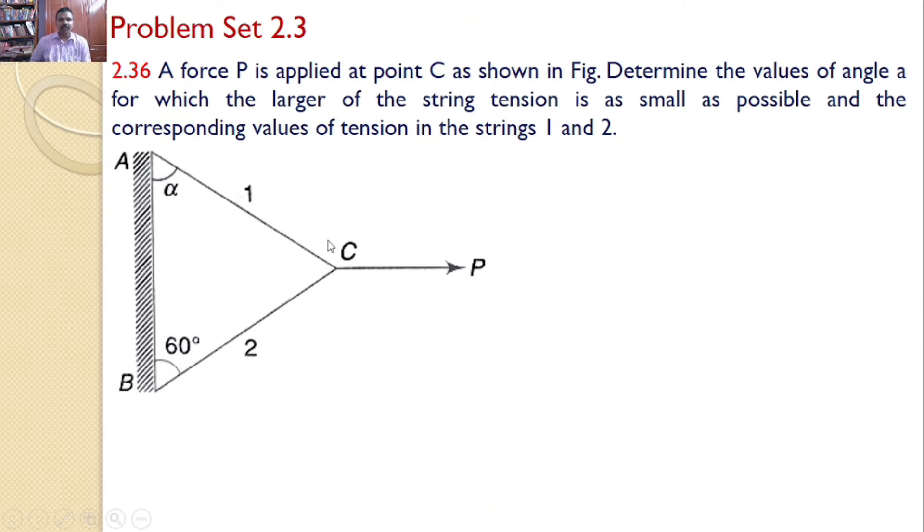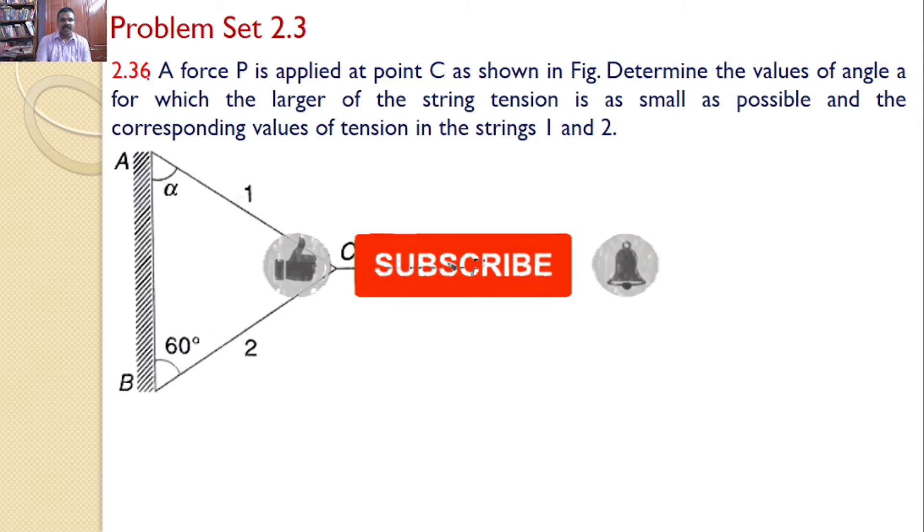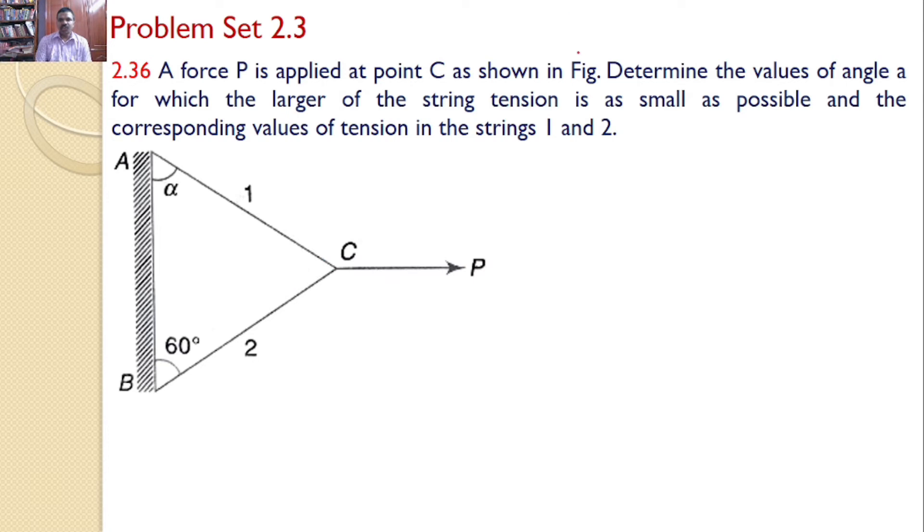In this tutorial we will discuss problem set 2.3, problem number 2.36. A force P is applied at point C as shown in the figure. Determine the values of angle alpha for which the larger of the string tension is as small as possible and the corresponding values of the tension in the strings 1 and 2.